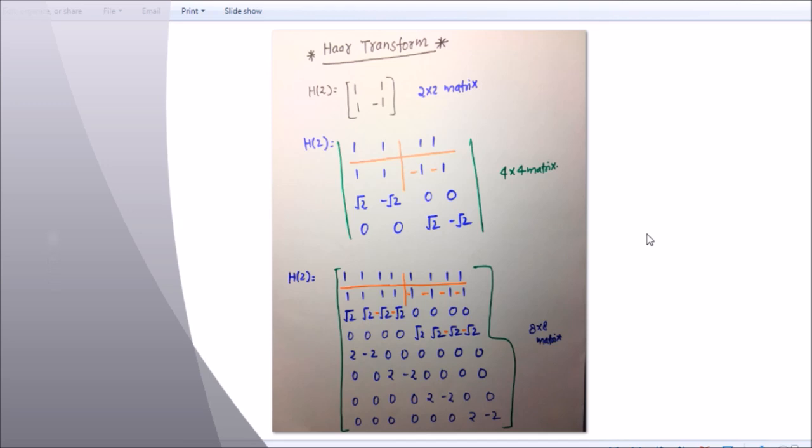Let's see. Haar has a basic 2 into 2 matrix which is [1, 1; 1, -1]. Now, if you want to find a 4 into 4 matrix, simply write this term twice. After writing, all the above terms are positive, these two terms are negative, so write this one.